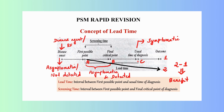The next point is Point C, called the usual time of diagnosis. Here the patient will be presenting with symptoms and you will be able to diagnose the disease, which is why it is called the usual time of diagnosis.